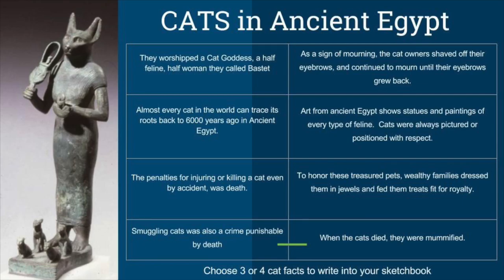Smuggling cats was also a crime punishable by death. As a sign of mourning, when a family's cat died, the owners would shave off their eyebrows and continue to mourn until their eyebrows grew back again.